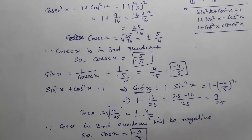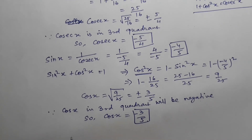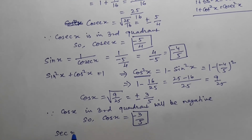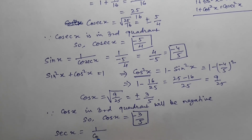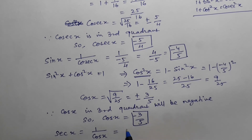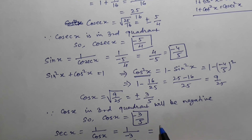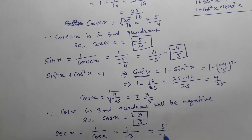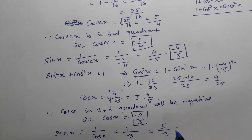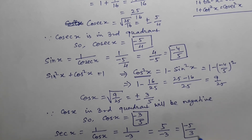After cos x, we find sec x. Since sec is the reciprocal of cos, sec x = 1/cos x = 1/(−3/5) = −5/3.